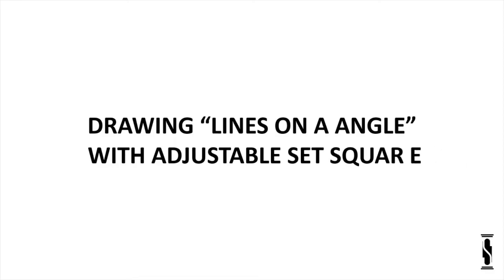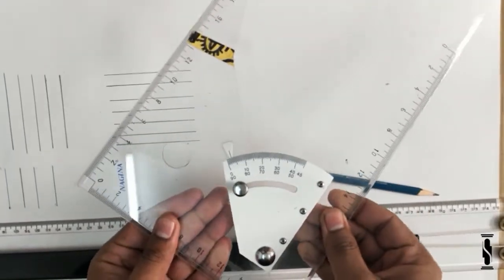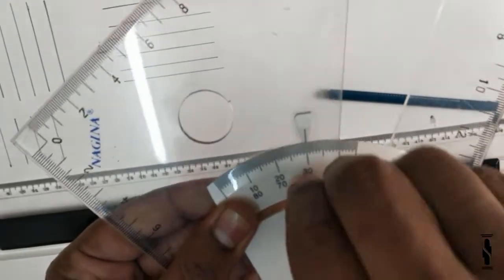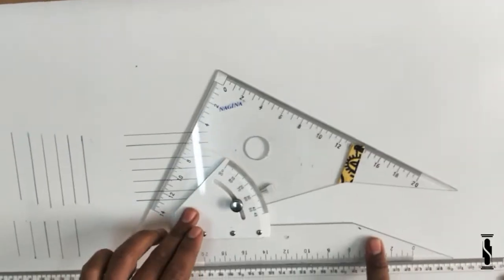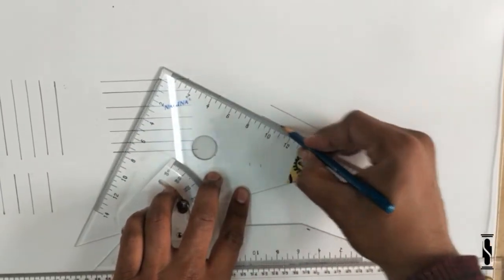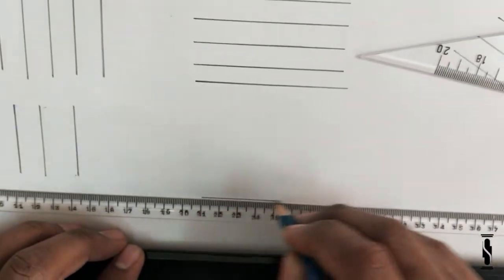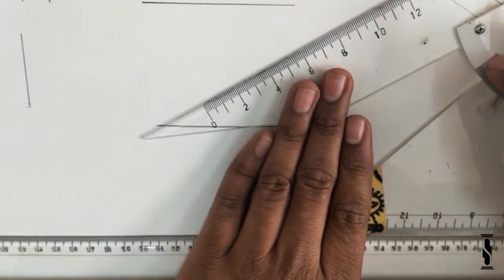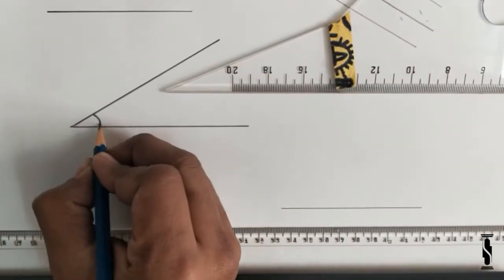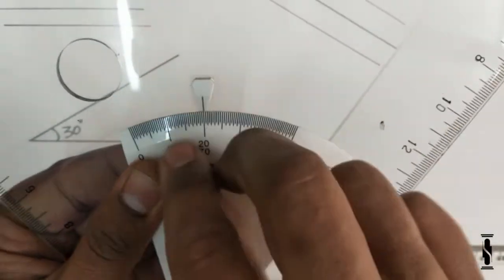Now, it's time to draw lines on an angle with the help of adjustable set square. So, set the desired angle, let's say 30 degrees in set square by operating its lock system, and put the set square on the edge of the parallel bar and draw the lines on the set angle. You can adjust it to any angle that you want to draw.